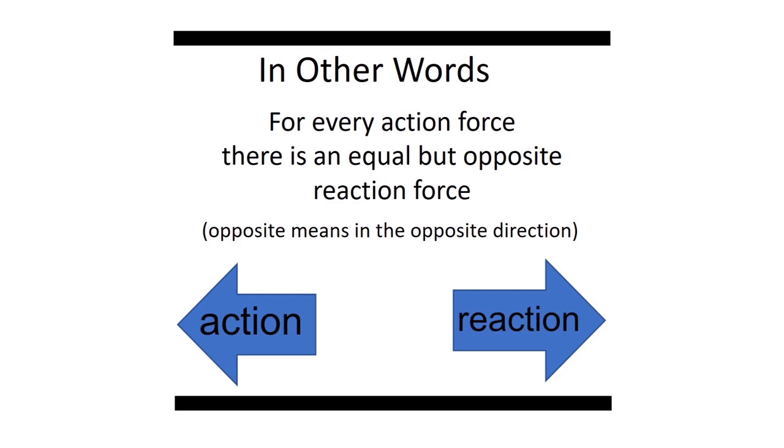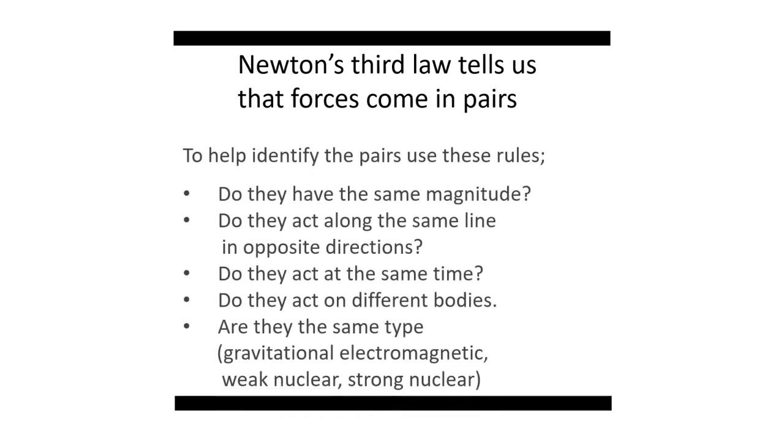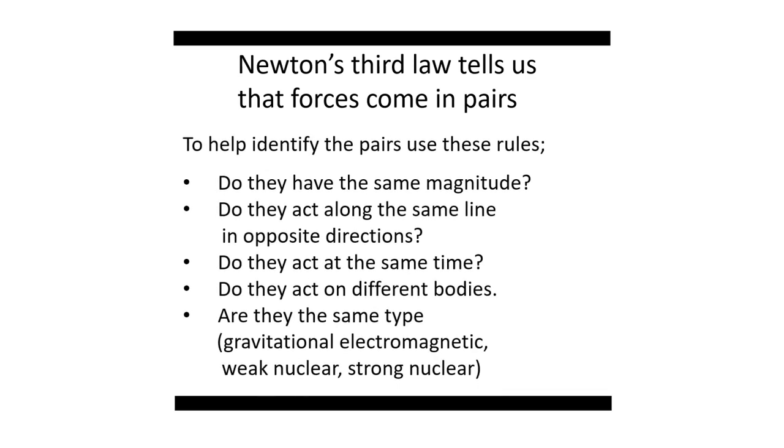Newton's third law. If you've ever tried pushing someone while on roller skates, you've experienced this law. Let's go into what it states. If a body A exerts a force on body B, then body B exerts an equal but opposite force on A. Let's use some other simpler words to get the message across. For every action, there is an equal but opposite reaction. But reaction, action, they don't make sense. So for every action force, there is an equal but opposite reaction force. Opposite in this context means in an opposite direction. If the action force is to the left, the reaction force will be to the right, as the arrows show right over here.